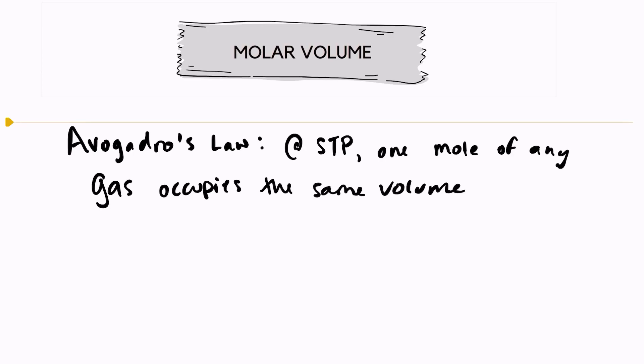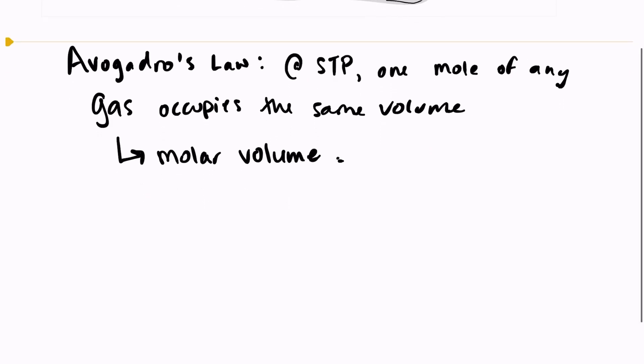And that volume is known as molar volume. It is a constant at standard temperature and pressure. Molar volume is equal to 22.7 liters per mole, or you may use the unit 22.7 decimeters cubed per mole. One decimeter cubed is equal to one liter. Those are interchangeable.